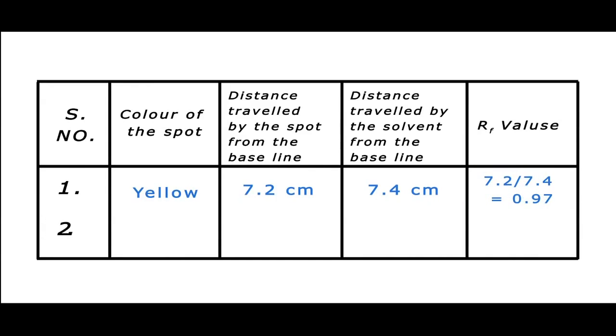Color of the spot: green. Distance traveled by the spot from the baseline is 1.8 cm. Distance traveled by the solvent from the baseline is 7.4 cm, and its respective RF value is 0.24.